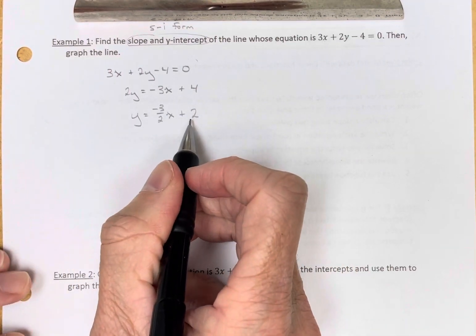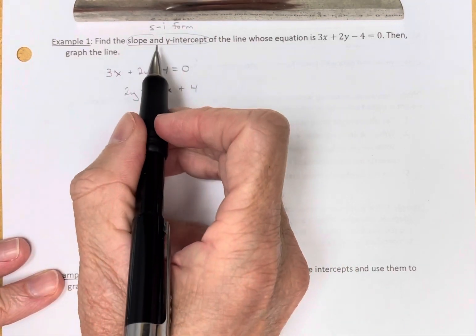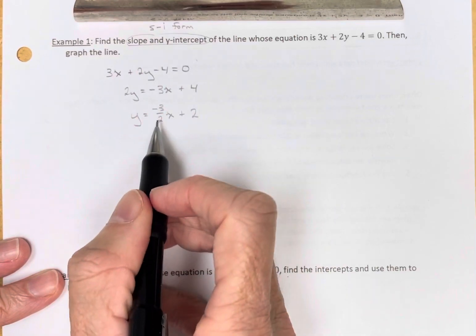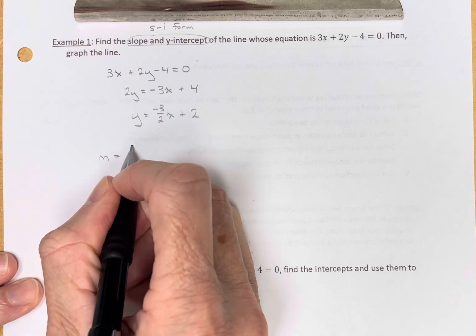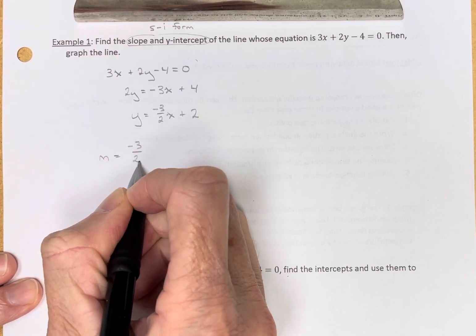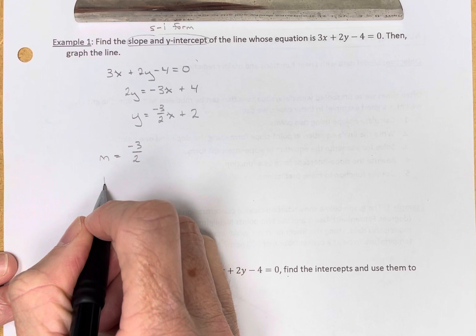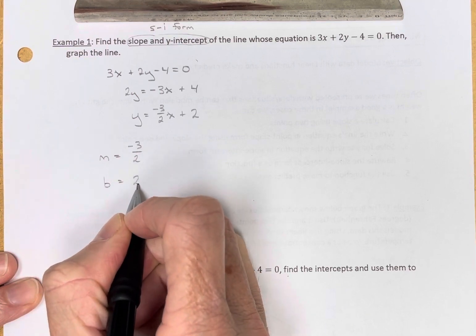So here is the slope-intercept form, and we wanted to find the slope and the y-intercept, so it made sense to put it in the slope-intercept form. The slope is negative 3 over 2, and the y-intercept b is 2.